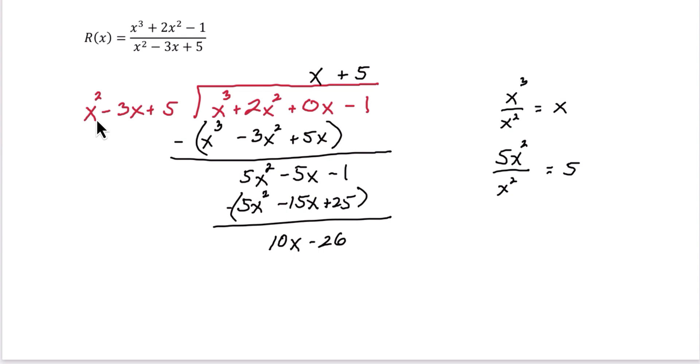But this is a remainder which we actually don't need. So all we use is the quotient. Put y equals in front of that, and we now have the equation of the oblique asymptote or slant asymptote.